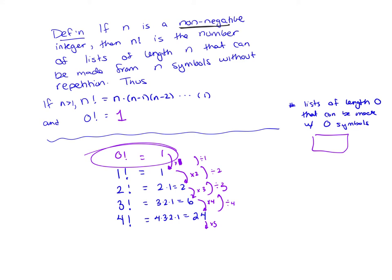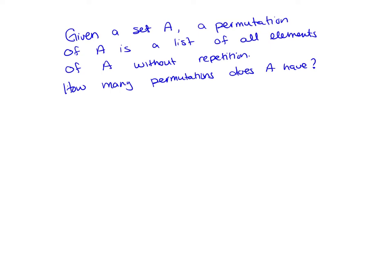And if it was 0, and I tried to multiply it by 1 to get to 1 factorial, I wouldn't be able to, because 0 times anything is 0. So that's another reason why it makes sense here. So there is one list of length 0 that can be made with 0 symbols, and that is that empty list.